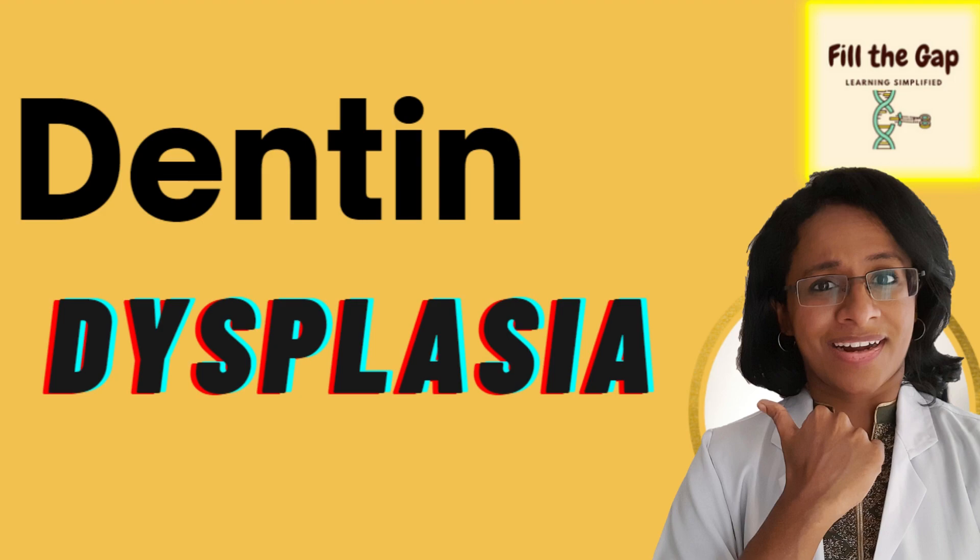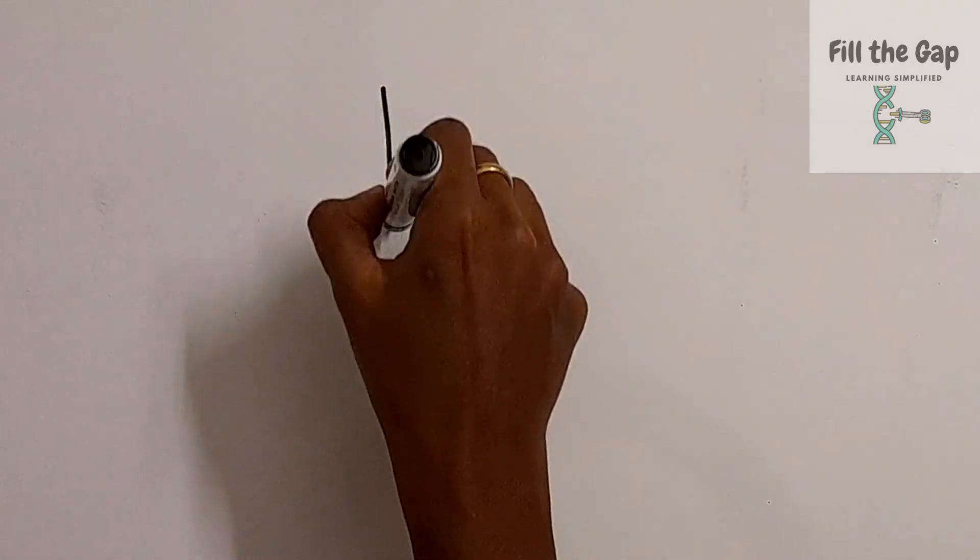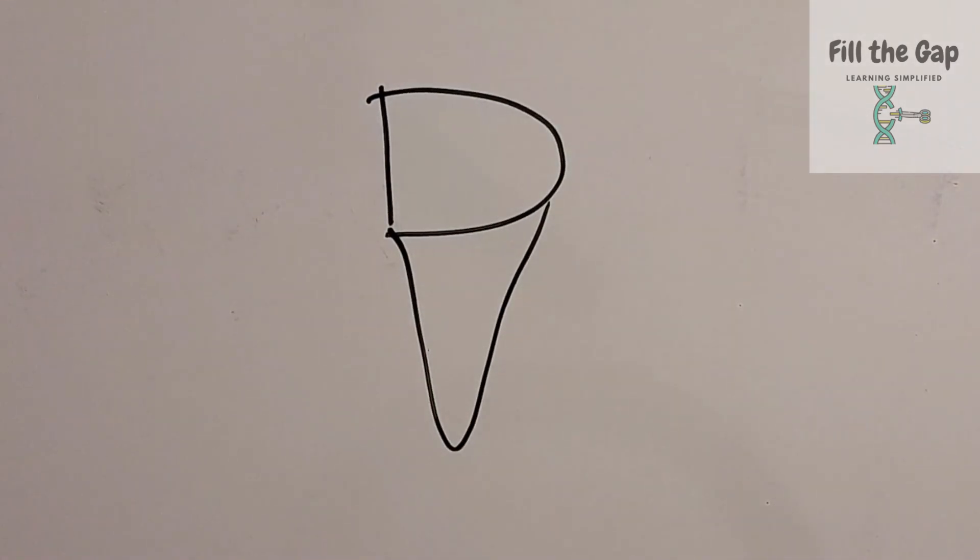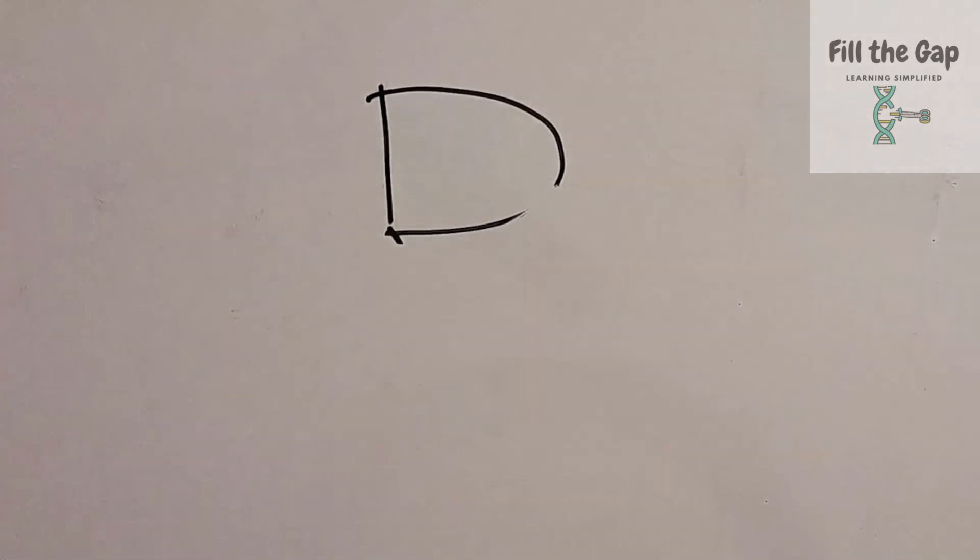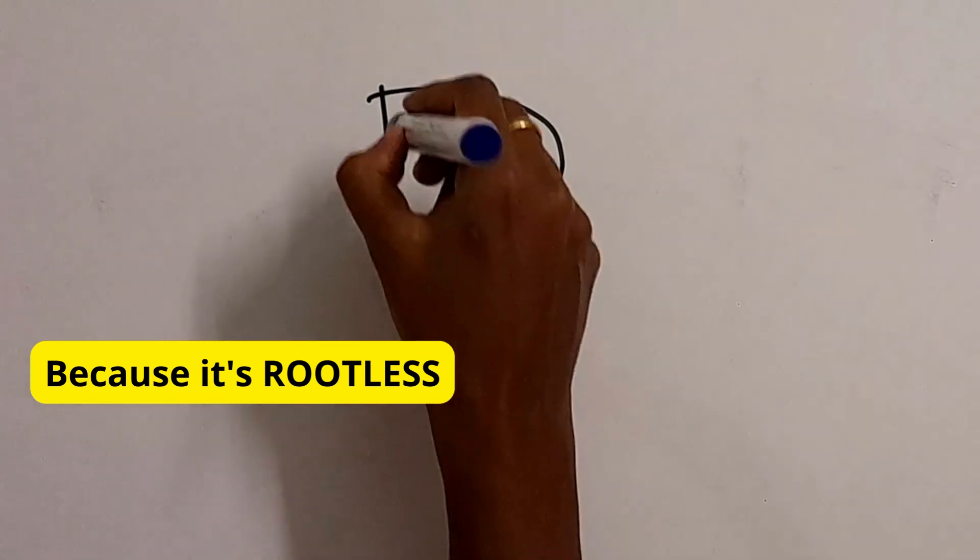Today we are going to learn about dentine dysplasia, also called rootless teeth. We usually draw a teeth like this. Now imagine the same teeth without the root. It will look something like this and that looks like the alphabet D.